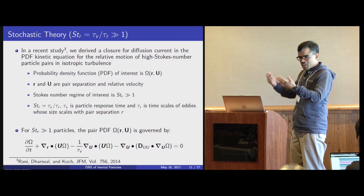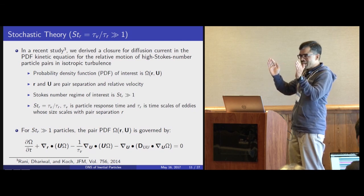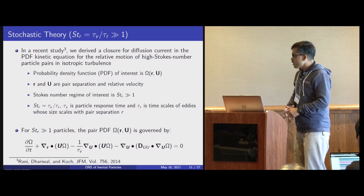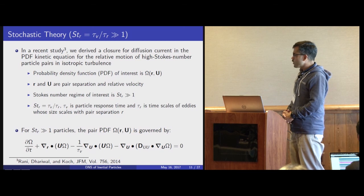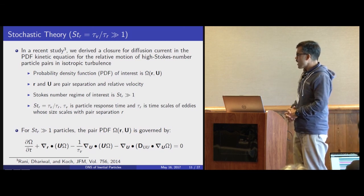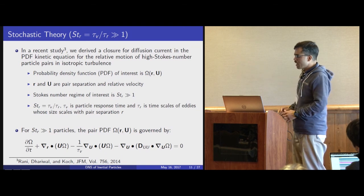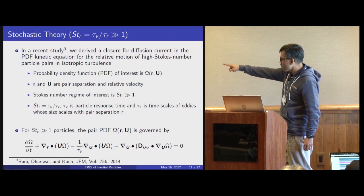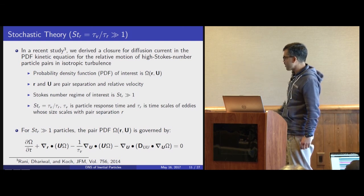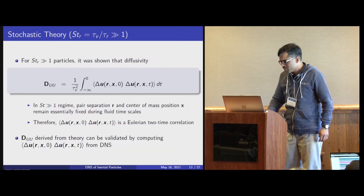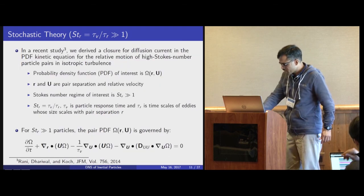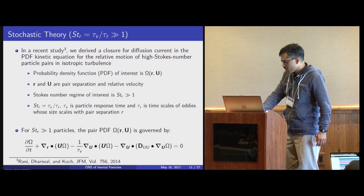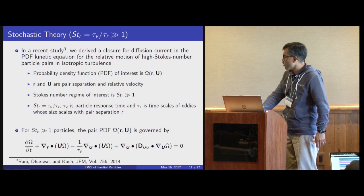Eddies whose size scales with the pair separation R have the most role in driving the relative velocities. For ST_R much greater than 1, the PDF Omega(R, U) is governed by a PDF transport equation. The key quantity is the diffusivity tensor D_UU, which appears in the last term. Using the stochastic theory, we derived an expression for D_UU — the diffusivity tensor in the pair relative velocity space — and showed that for high-inertia particles, D_UU takes the form shown here.